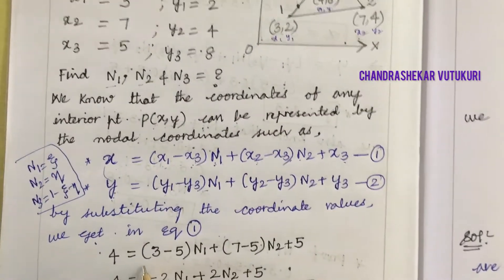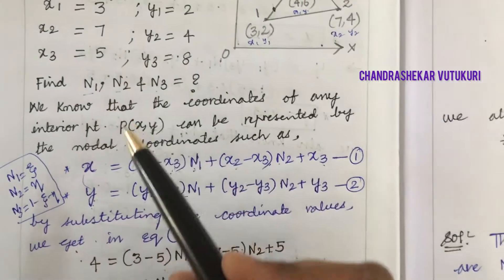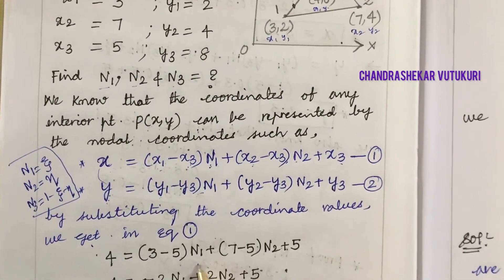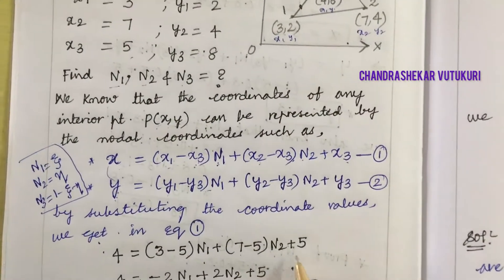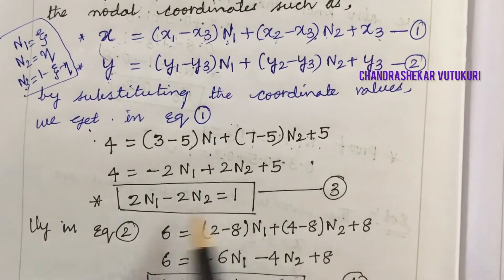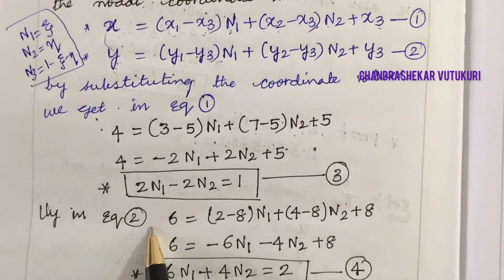x is 4, x1 is 3, x3 is 5, so we have (3-5)N1, and x2 minus x3 is 7 minus 5 times N2, plus 5. Upon calculation, you get this equation with two unknowns, so I've kept this as equation 3.